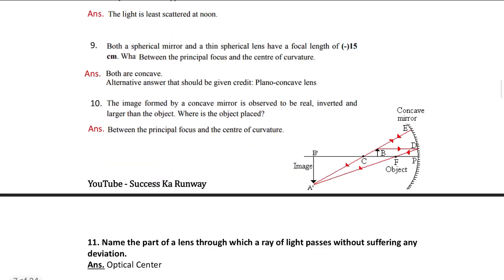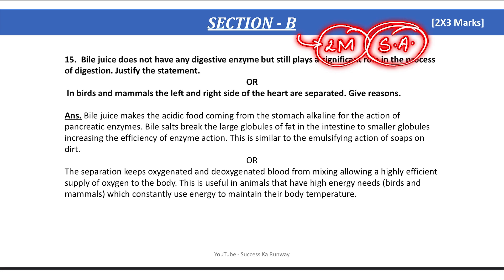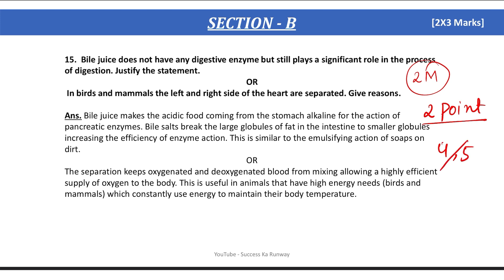The next section is Section B, which carries 2 marks per question. These are short answer type questions where you need to write a little. For a 2-mark question, you only need to write 2 points. Even if you know 4 or 5 points, just write 2 points — writing more will not get you extra marks in the exam.